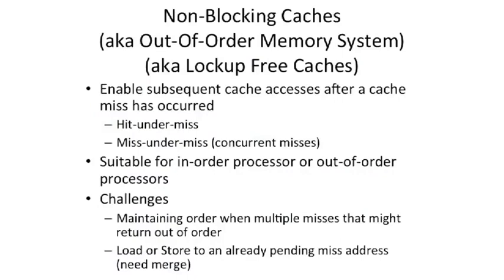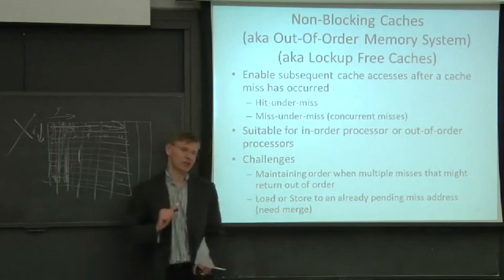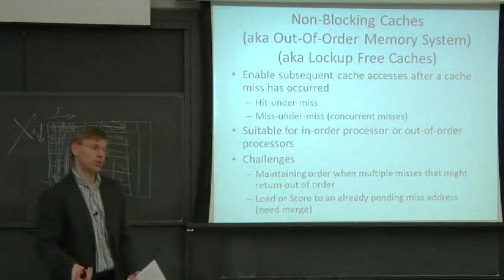A couple of big challenges here. If you have multiple out-of-order misses, the memory system is going to return data out of order. You might end up in a different memory bank and data comes back in a different order than you sent it out. You sent out cache misses for x, y, and z, and they come back in z, y, x order. You need to make sure you're delivering the right data to the right location in the cache and to the right instruction. We're going to need a large associative table to figure this out.